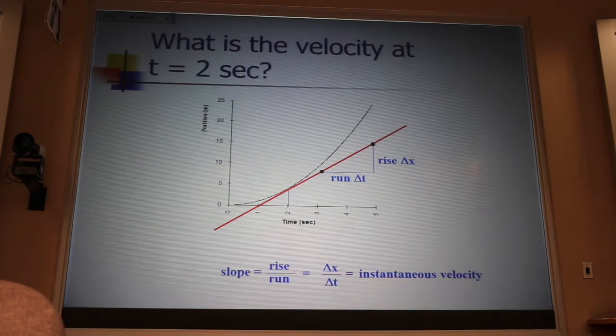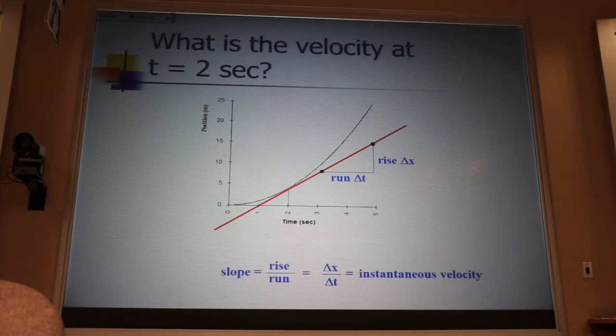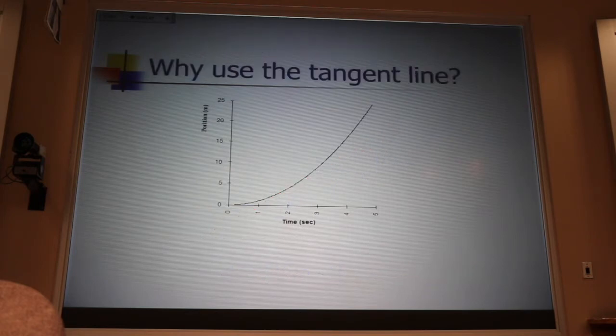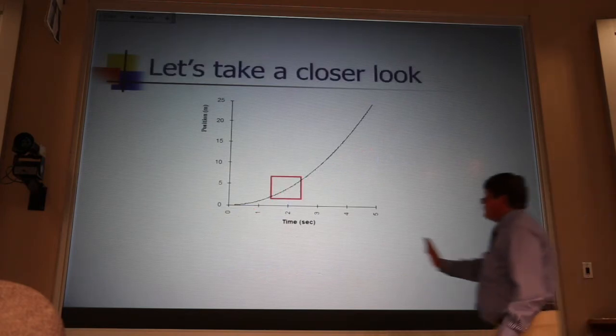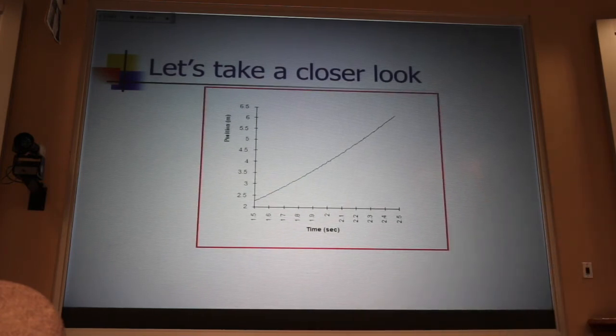Now, folks, even those of you that know calculus, why is it that the slope of that tangent line is going to give me the instantaneous velocity? And to help you see that, I'm going to ask us to zoom in on that graph. If I look at that graph just from 1.5 seconds to 2.5 seconds, it looks like that.